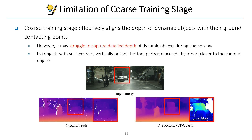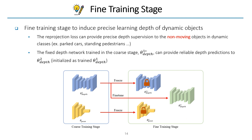However, for some cases, our coarse training stage can lead to inaccurate depth of dynamic objects. So we fine-tune the depth estimation network in the following fine training stage. We freeze the trained depth and pose estimation network and use them to provide reliable depth and pose predictions. By cloning the depth estimation network, we further fine-tune the network with the reprojection loss for whole image regions, which can provide precise depth supervision to the non-moving objects.